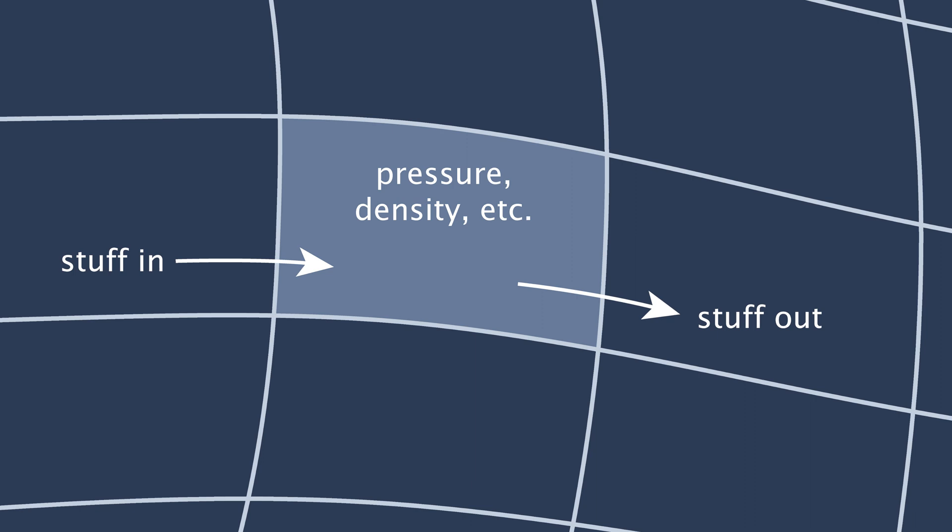We can express this in the R(U) equals zero form by saying we want the stuff going in minus the stuff going out to be zero. Then Newton's method can be applied to the system to efficiently solve it.